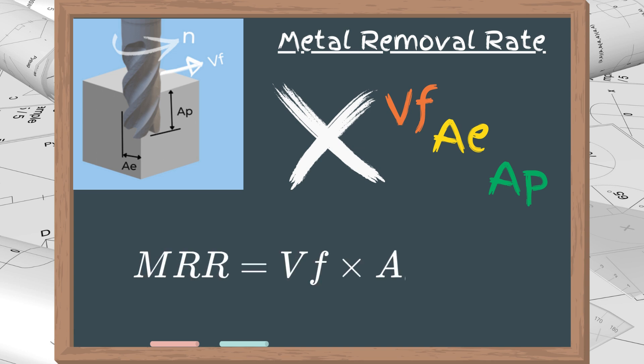The formulas for metric units is Vf times AE times AP. In imperial units, the same is divided by 1000.